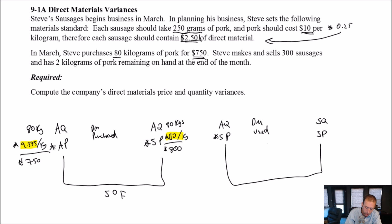Let's move over to actual quantity used. So we're interested in direct materials used. So let's see, Steve purchased 80 kilograms. Did he use all of it? Because a lot of these questions, they use all of it. But the answer here is no. And how do I know he didn't use all the pork? Because he had two kilograms left over. So if he bought 80 and he had two left over, he must have used 78 kilograms. Our standard price remains 10. 78 times 10 is 780.